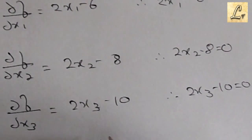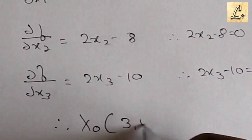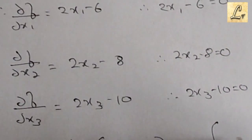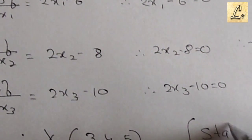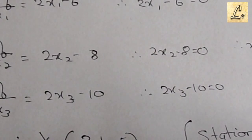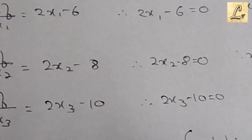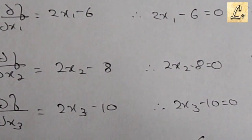So we get the stationary points as (3, 4, 5). Now what we'll do is create a Hessian matrix. A Hessian matrix contains double derivatives.